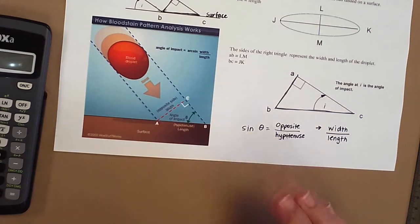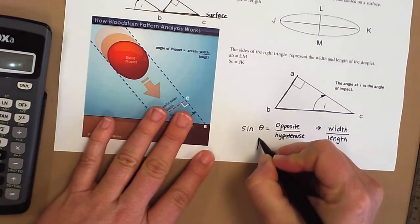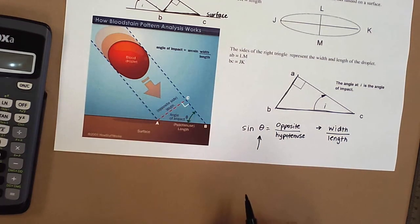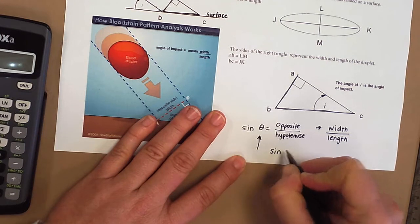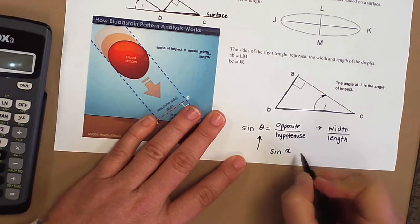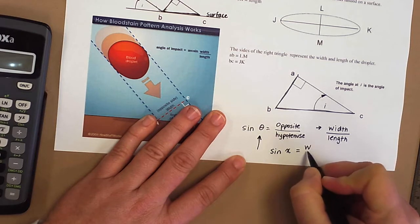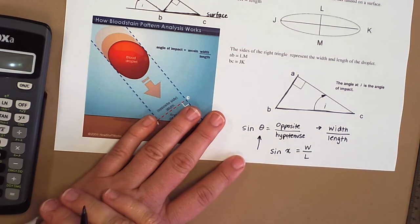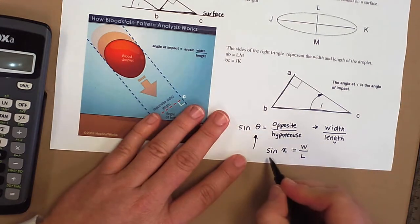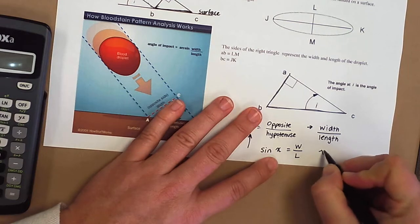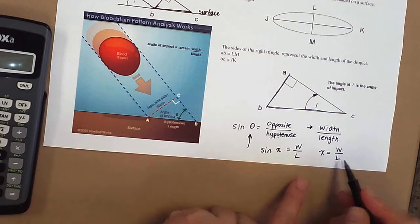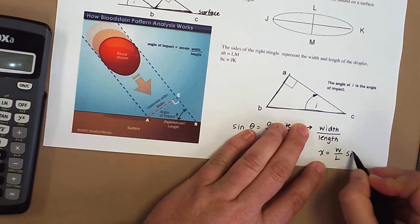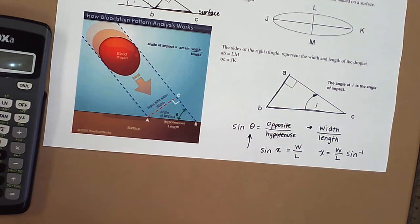Now bear with me a moment. Let me show you how we actually solve for this part right here. The angle is what we really want. So it's almost like saying sine of your variable—that is the part that we want to solve—is equal to the width of your blood droplet divided by the length. If we rearrange that, we would need to divide both sides by sine. So really what you're going to have in your calculations is width divided by length, and then you're going to take the inverse sine of that measurement.